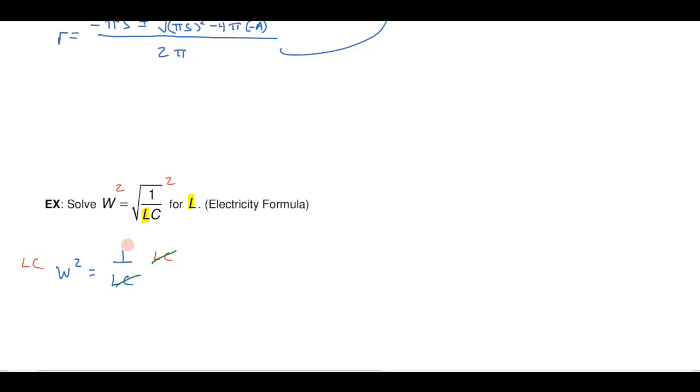So on this side they're going to cancel. I'll just be left with 1. Over on this side I'll get L times C times W squared is equal to the 1. Again I'm trying to get the L all by himself. So all I have to do is just divide both sides by the CW squared.